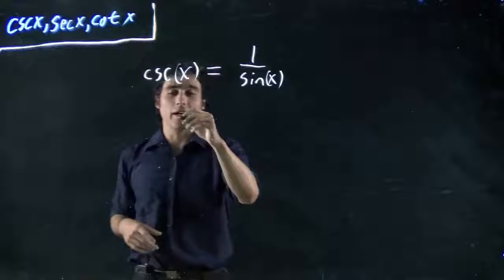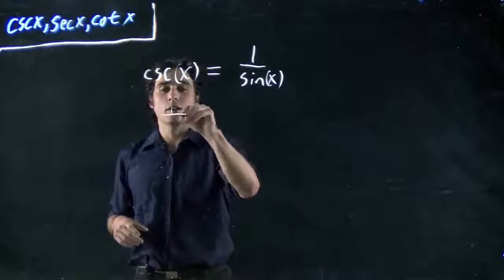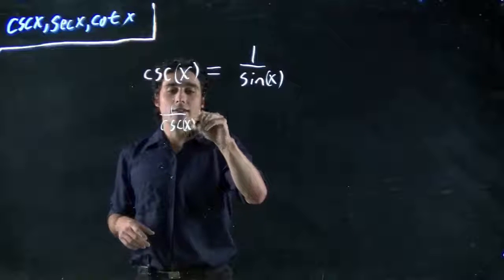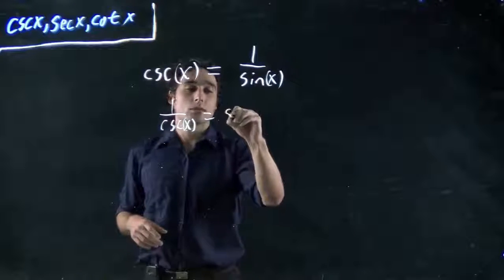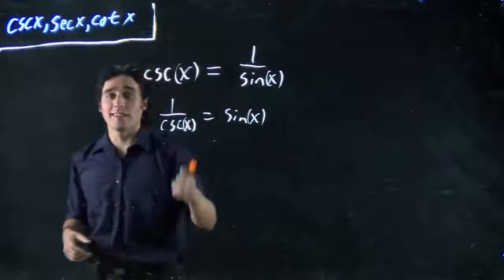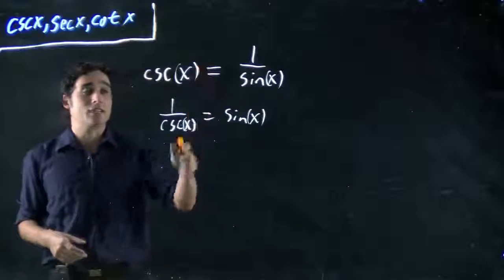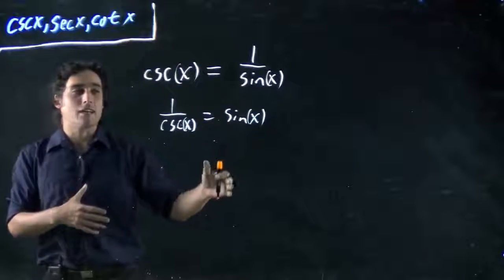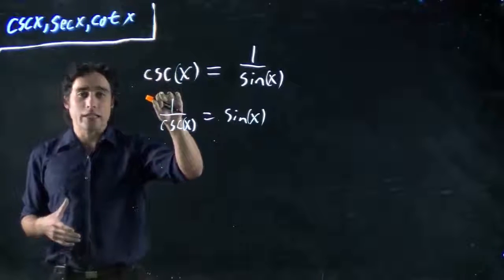So by that stretch, I can also say 1 over cosecant x is equal to sine x. And really, this is what you need to know about these functions. This right here, we'll look at the others in a second, but you don't worry about cosecant x.